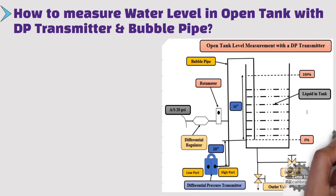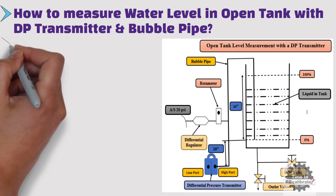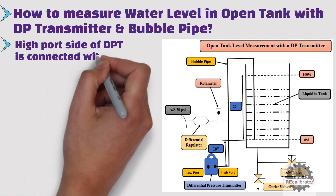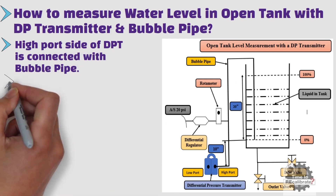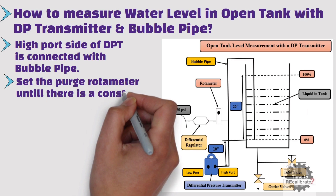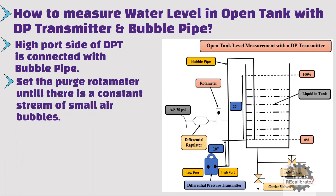As you can see from the picture, the differential pressure transmitter is installed 10 inches below from the minimum level of liquid in the tank. The high port side of the DPT is connected with the bubble pipe. Set the purge rotameter until there is a constant stream of small air bubbles. Because of the bubble pipe, transmitter position does not affect the calibration range, and we can neglect transmitter installation.